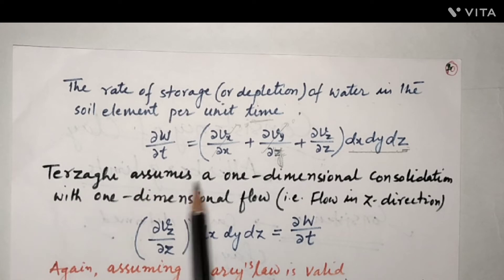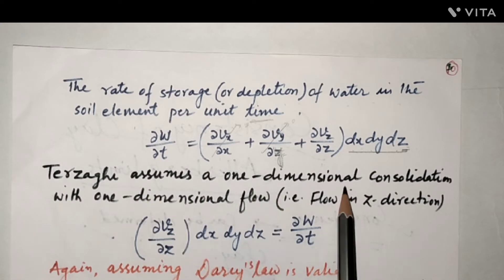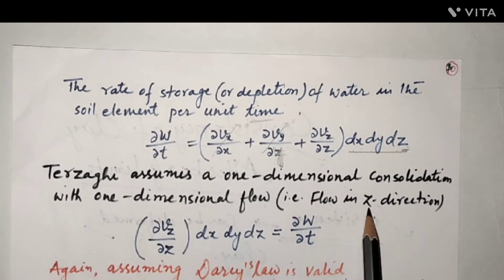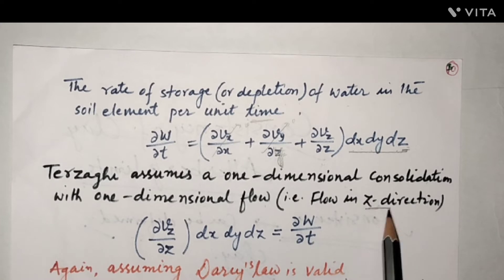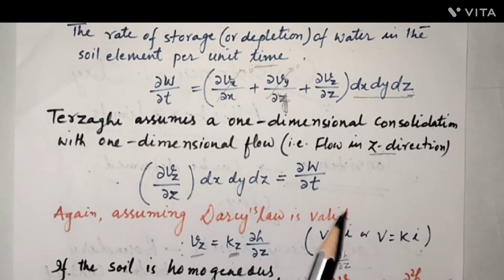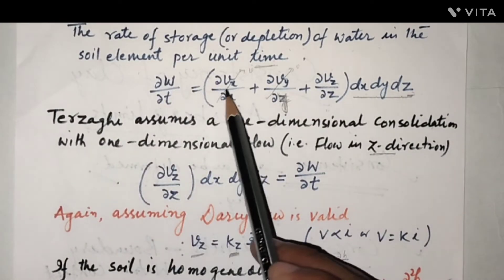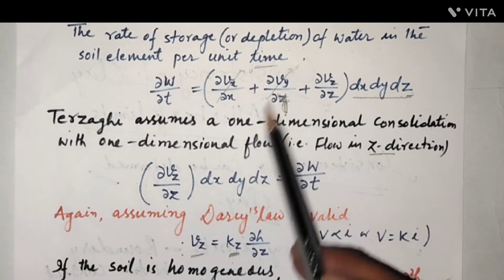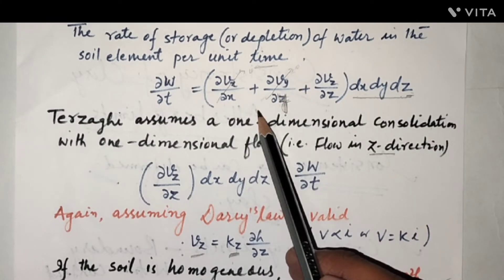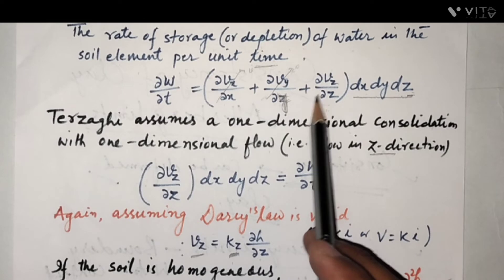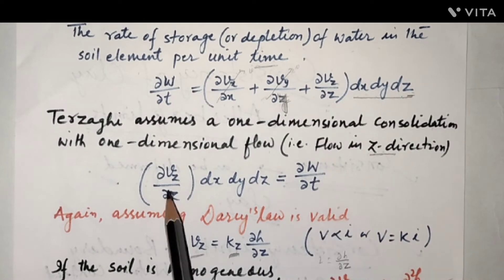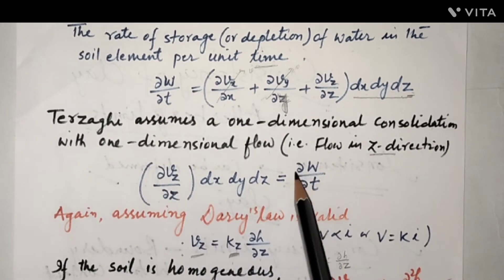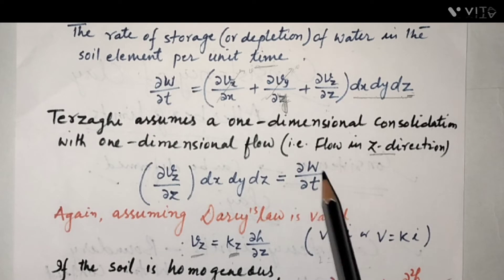Terzaghi assumes one-dimensional consolidation with one-dimensional flow, that is flow in the z-direction only. It means flow in the x-direction and flow in the y-direction will be zero. So this equation becomes: ∂Vz/∂z · dx·dy·dz = ∂W/∂t.